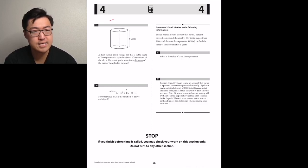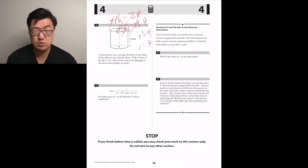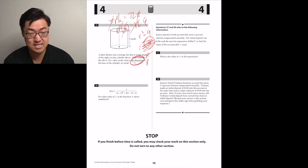Number 35, a dairy farmer uses a storage silo that's in the shape of the right circular cylinder above. If the volume of the silo is 72 pi cubic yards, what's the diameter of the base of the cylinder in yards? So then area of a cylinder is pi r squared height. So pi r squared height is equal to 72 pi. You can remove the pies from both sides. r squared height is equal to 72. We know that height is equal to 8. So r squared times 8 is 72. That would mean that r squared is equal to 9. So then r is 3. If r is 3, the diameter is six. I think it's six.